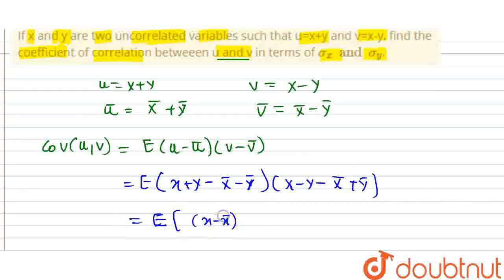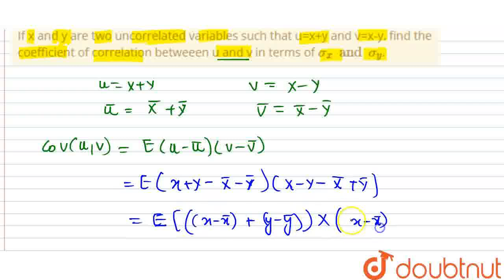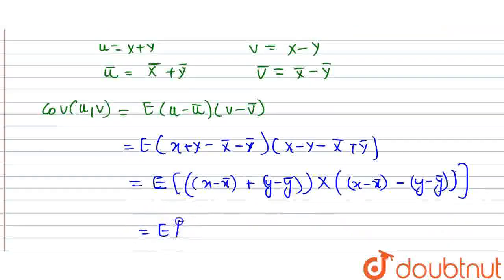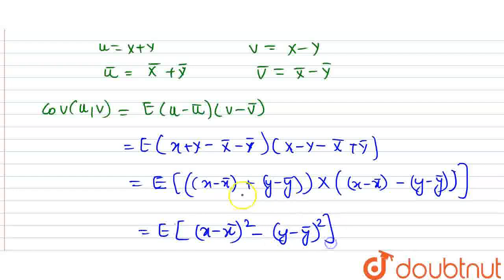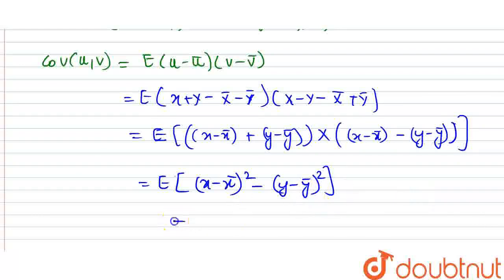So we get x minus x-bar plus y minus y-bar, into x minus x-bar minus y minus y-bar. We get the values inside this bracket and this square bracket. So E of x minus x-bar whole square minus y minus y-bar whole square, because this is of the form (a+b)(a-b) = a² minus b², the algebraic identity. There will be a minus sign here.